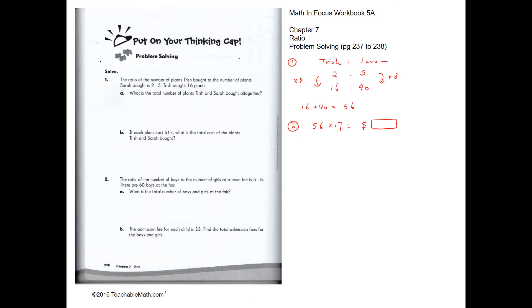Question 2. The ratio of the number of boys to the number of girls is 5 is to 8. There are 60 boys. So to get from 5 to 60, we times 12. So 8 times 12 would be 96. So total number of boys and girls would be 60 plus 96, which is 156.